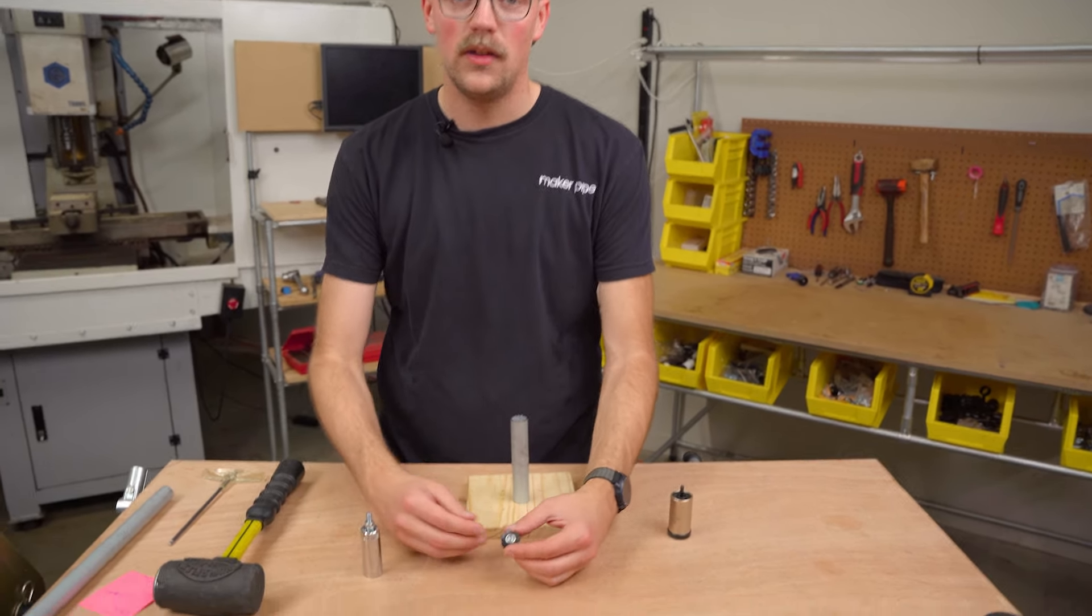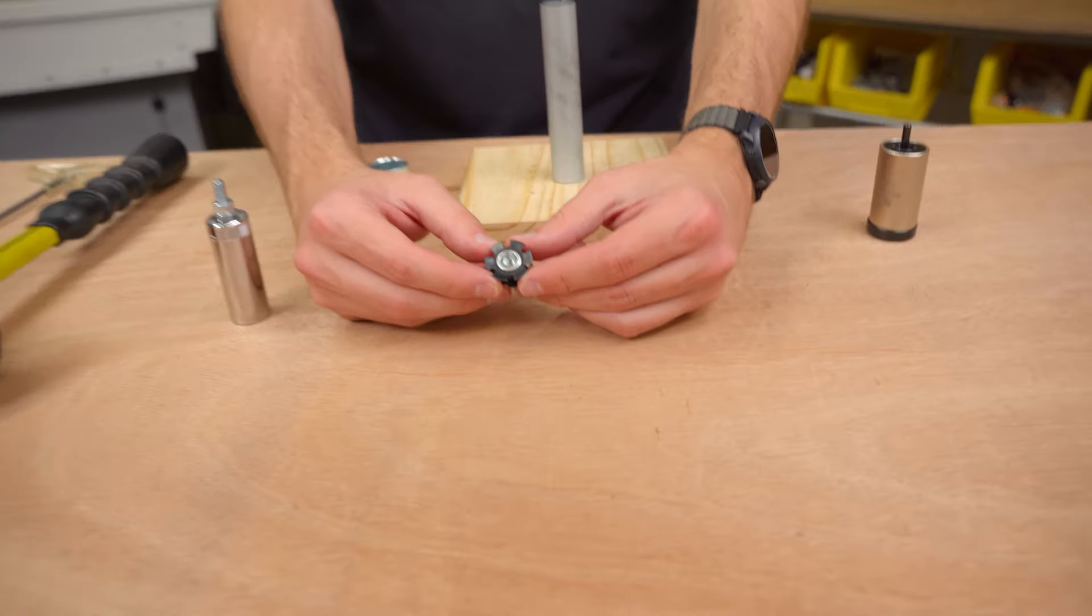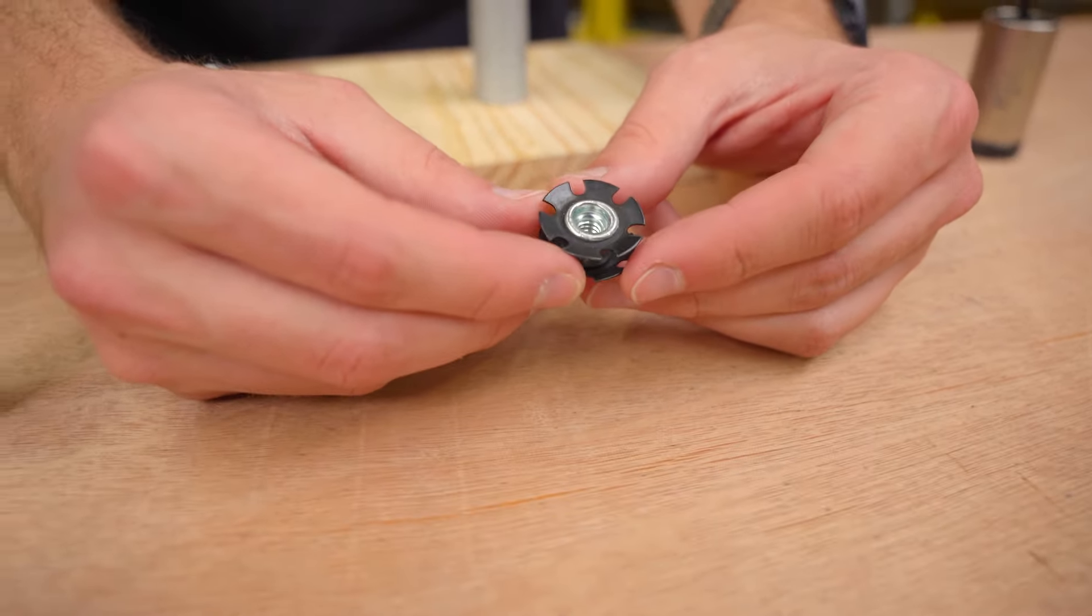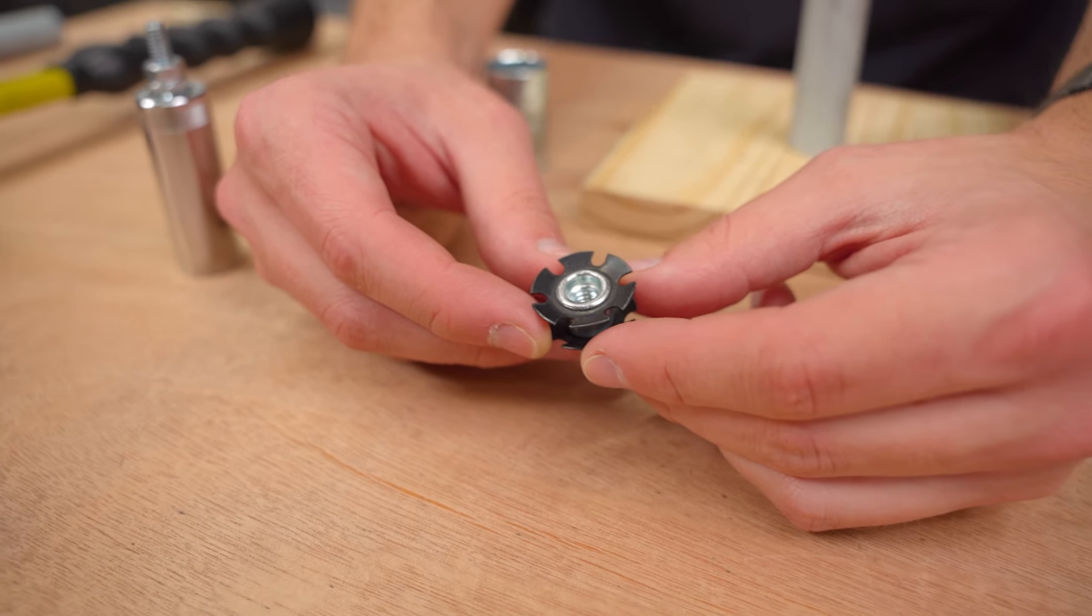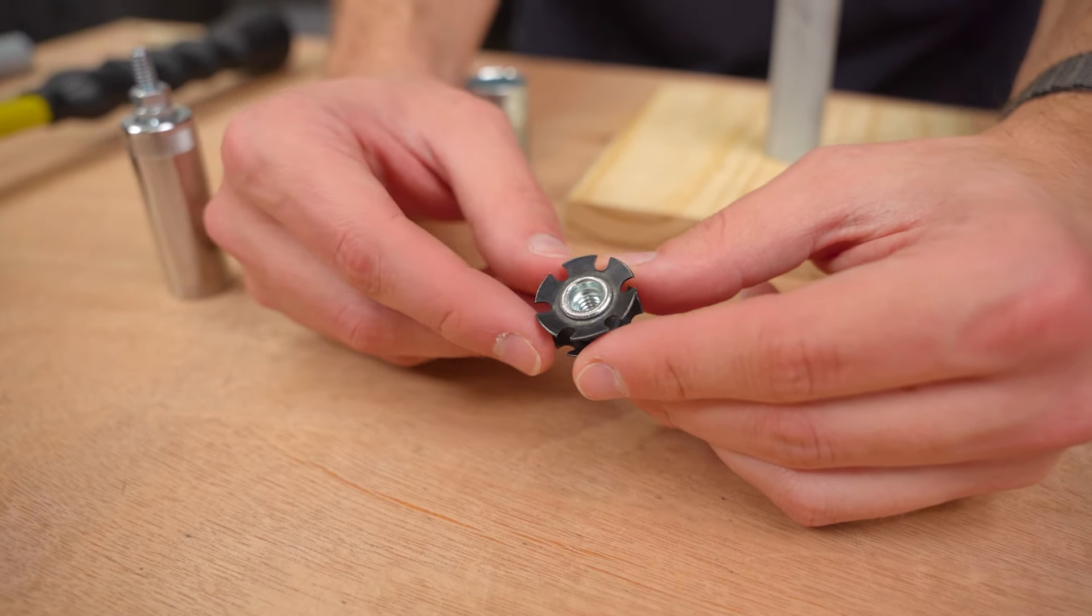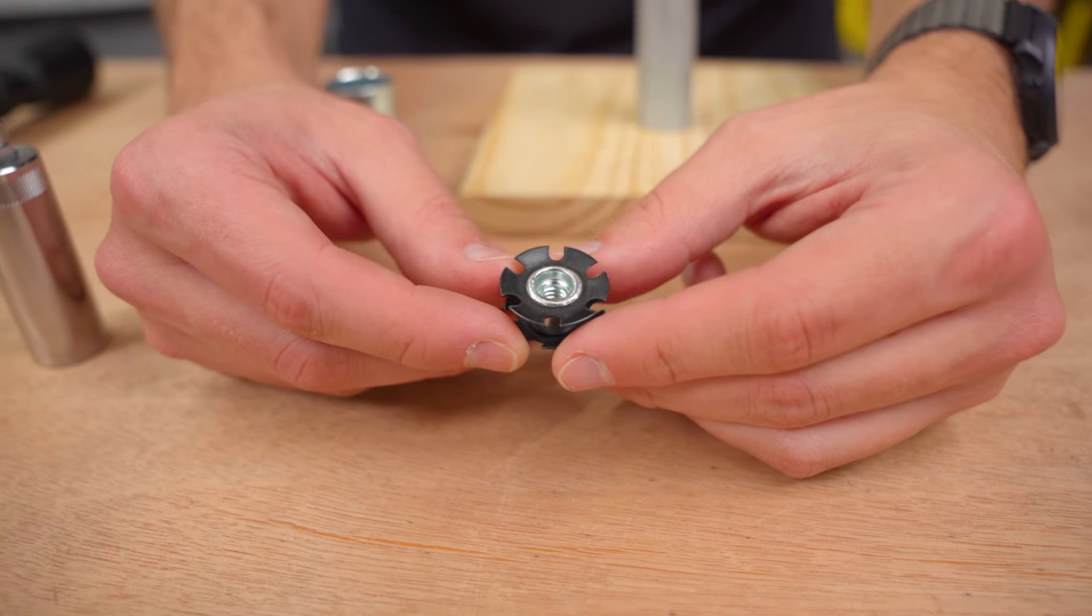The accessory that we talk about the most on the channel are these threaded pipe inserts that you hammer into EMT conduit. Because they're so versatile, they allow you to use all kinds of things that are threaded with 1/4-20 or 3/8-16 in your EMT conduit builds.